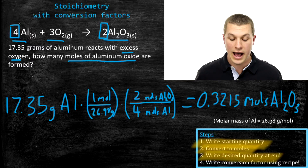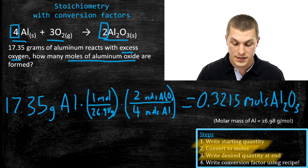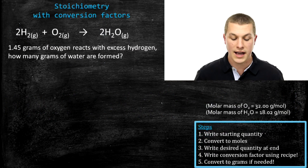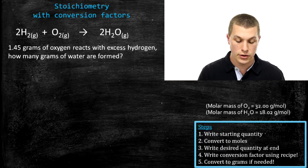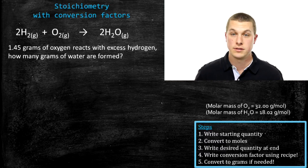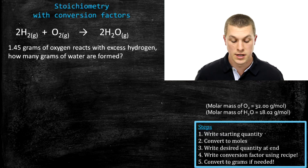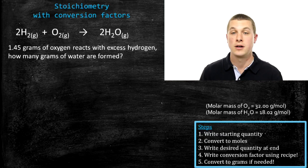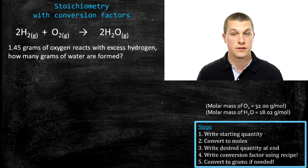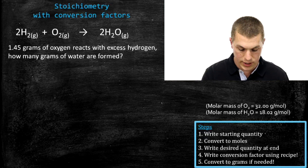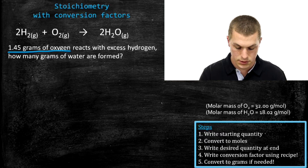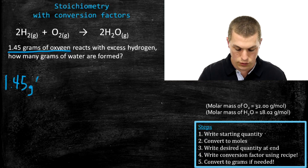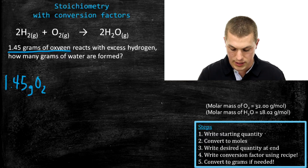Let's look at our next stoichiometry problem. Here we're reacting oxygen with excess hydrogen to find the grams of water formed. In the previous problem, our final answer was in moles; this time we want grams, which adds one more step. We start the same way — writing our starting quantity: 1.45 grams of O₂.